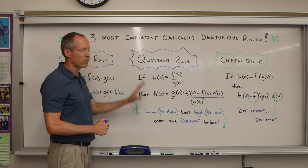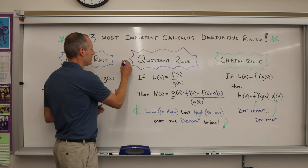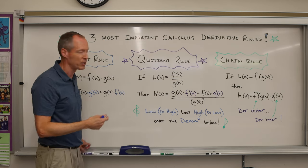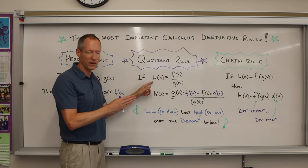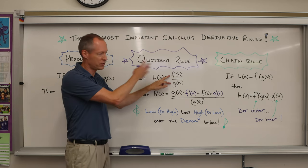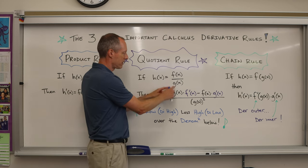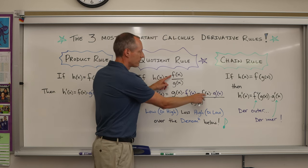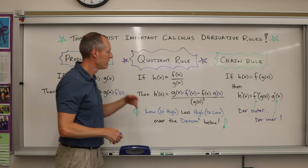The quotient rule - this is my favorite one. The quotient rule is when you have a function defined as two functions divided, so f(x) divided by g(x). If I'm taking the derivative, the rule is it's the denominator g(x) times the derivative of the numerator minus the numerator times the derivative of the denominator, all over that denominator squared.